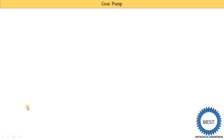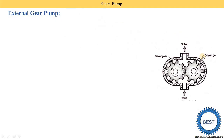First, we understand what is the external gear pump. From the name, we can understand that gear is used for transferring fluid from one place to another. In external gear pump, the gears are externally meshing with each other, whereas in internal gear pump, the gears are internally meshing. The gears used may be spur gears or helical gears.